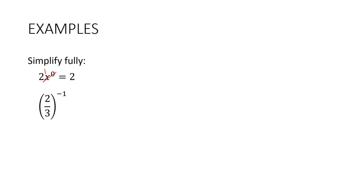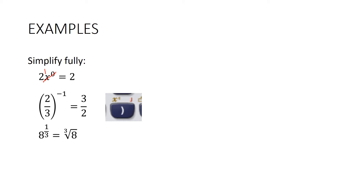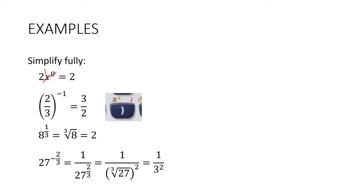8 to the power of a third is the cube root of 8, which is 2. You can also get a mixture — for example 27 to the power of negative 2/3. It doesn't matter which order you do this in. I'm going to take the reciprocal first to get rid of the negative, then do the cube root. The cube root of 27 is 3, leaving 1 on 3², which is 1/9. Try it a different way to prove to yourself you get the same answer.